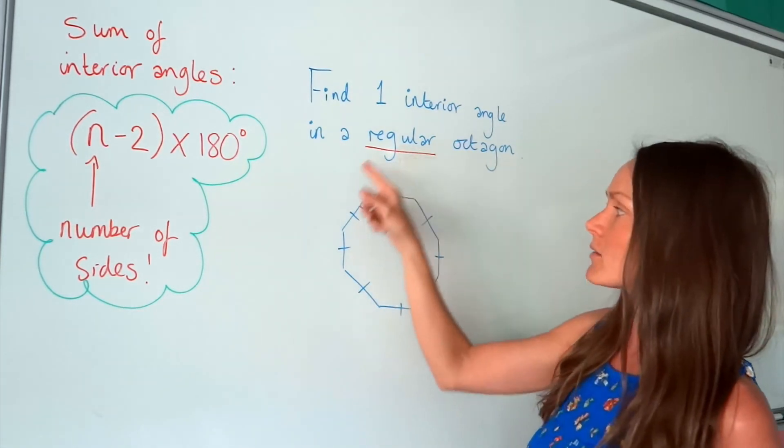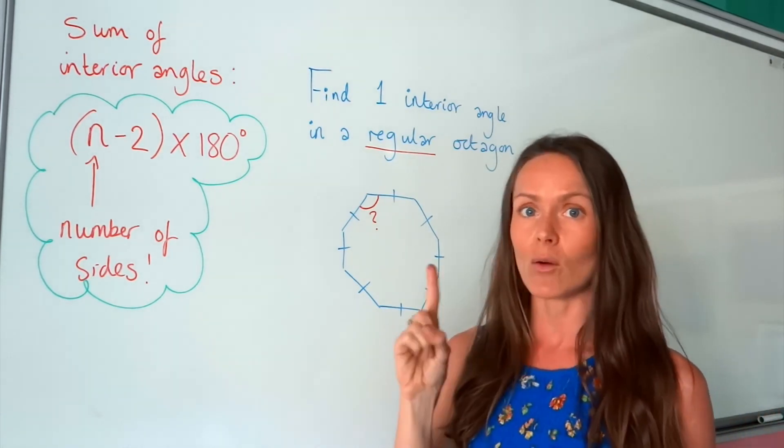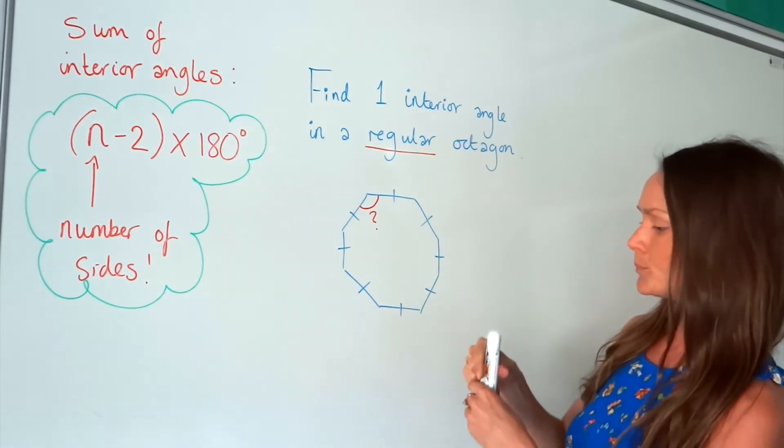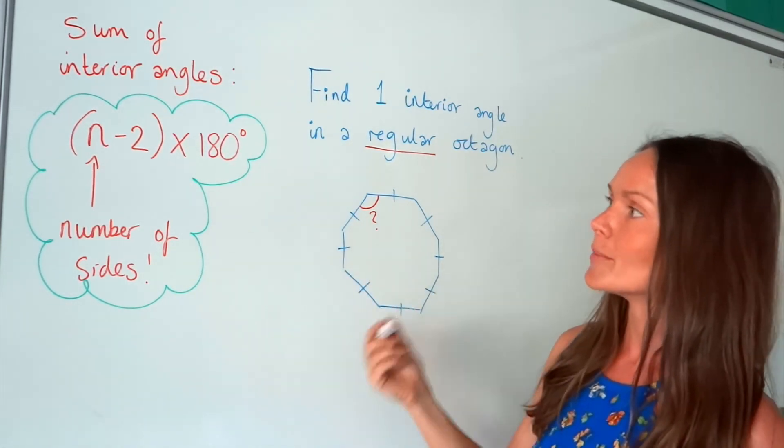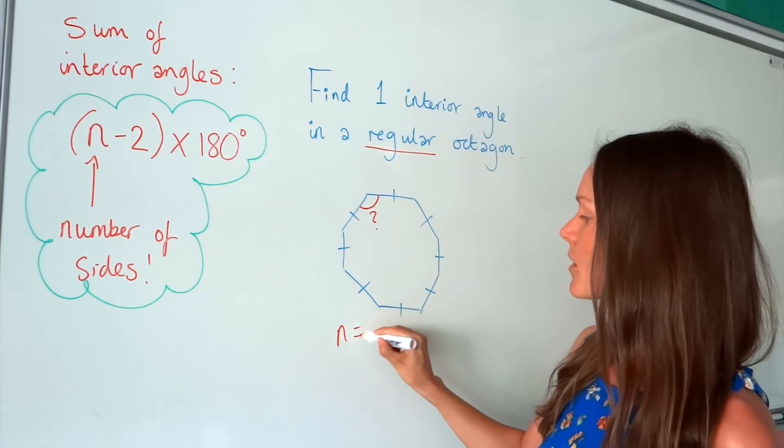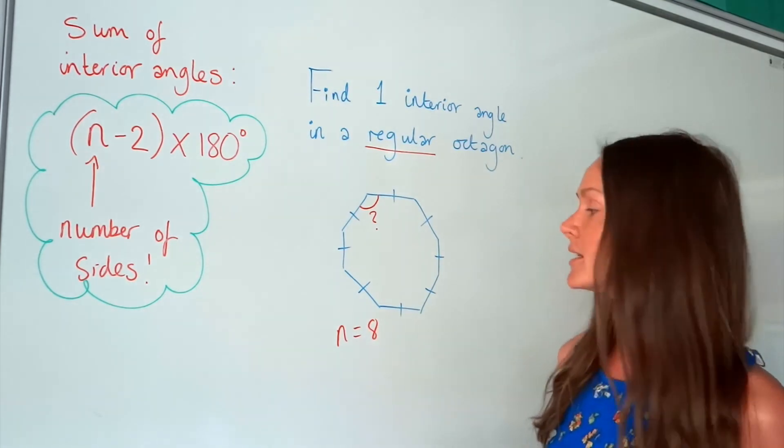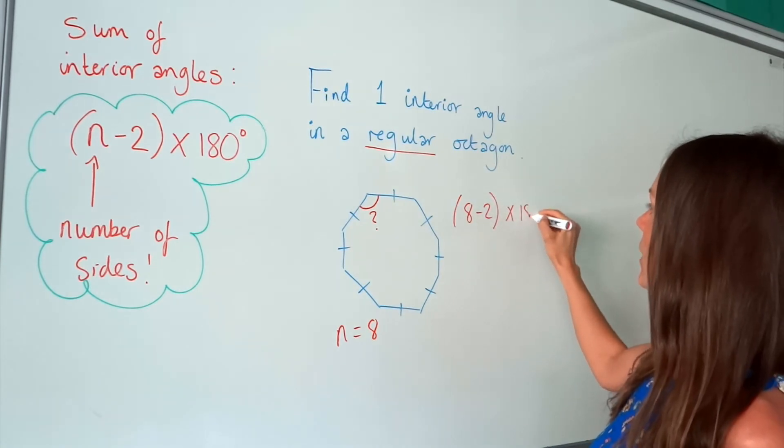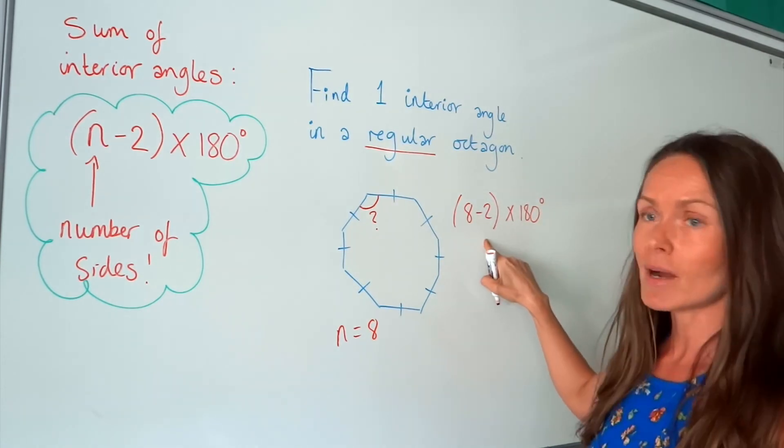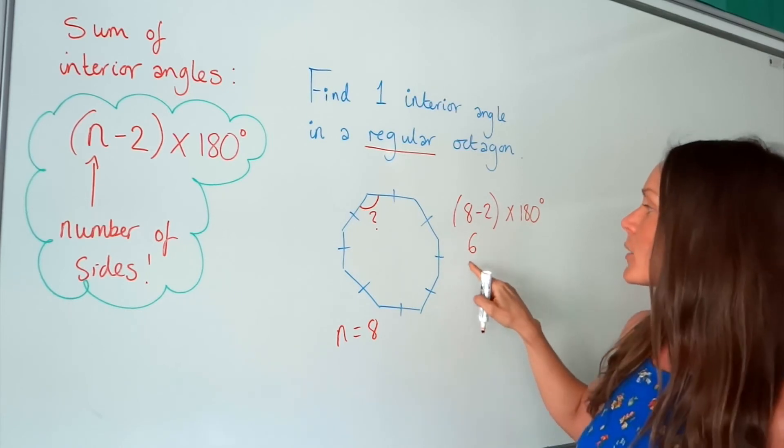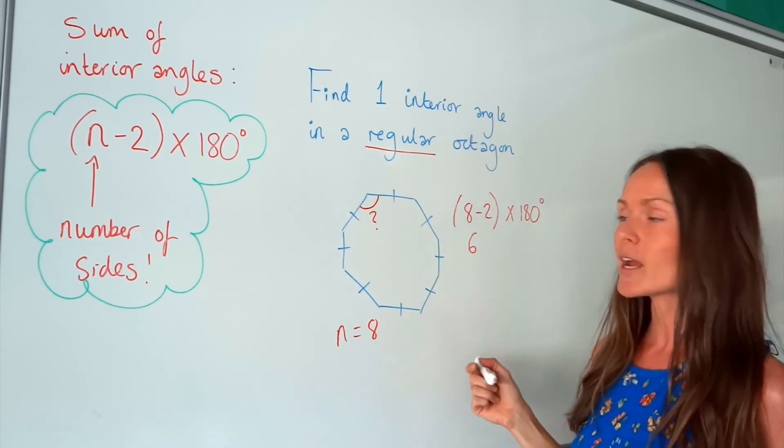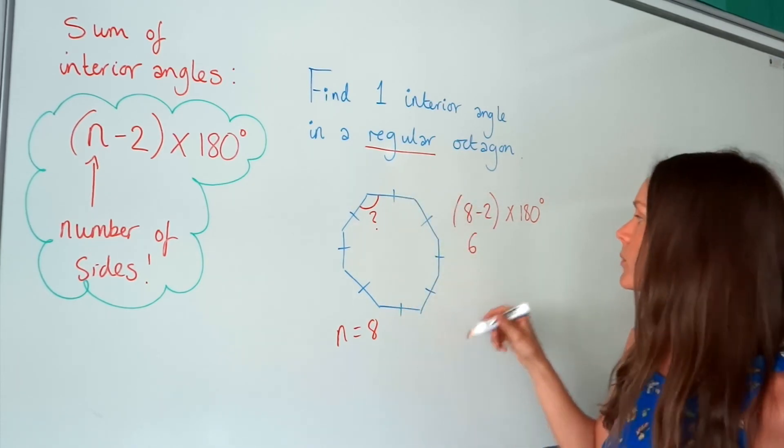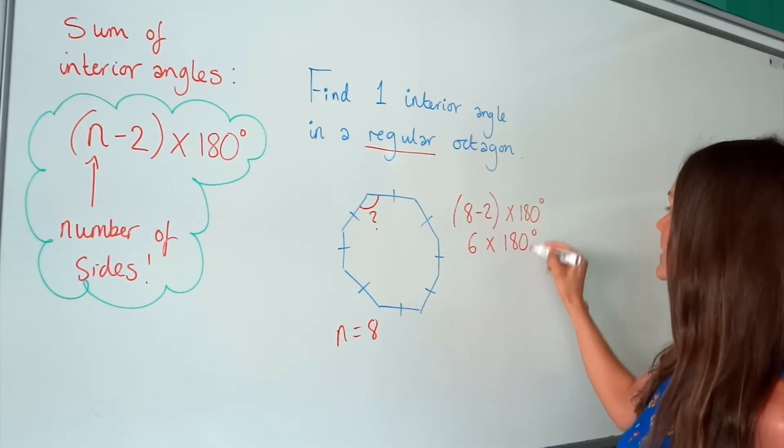So if we can work out the sum of interior angles, all we need to do to work out one is divide by the number that there are, which is eight. So, using my formula, remember n is the number of sides. So in this example, n is equal to eight. So, you do eight minus two, and then you multiply by 180. Eight minus two is six. So if I was to split this octagon into triangles, I should find that there are six triangles within this shape. So then, we times by 180.